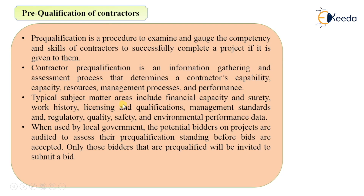Typical subject matter areas include: financial capacity — we will check his financial capacity first; then surety — whether he will give surety or not; work history — what type of work he has completed in the past, whether he has completed this type of project or not. For example, if you want to give him a public building construction, dam construction, minor culverts, bridge construction — whether he has been involved in related or same type of structures in the past.